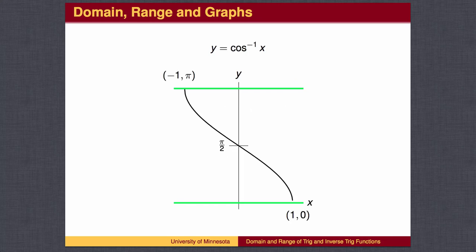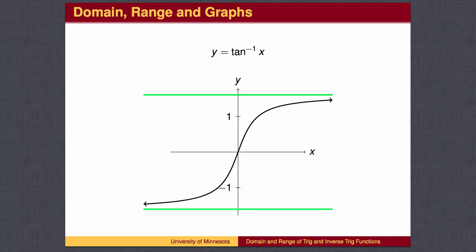Similarly, the domain of the inverse cosine function goes from negative 1 to 1, and the range from 0 to pi. The domain of the inverse tangent function is all real numbers, and the range from negative pi over 2 to pi over 2.